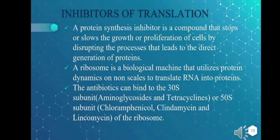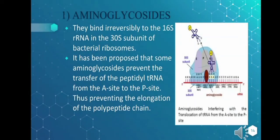Now we'll look at inhibitors of translation. A protein synthesis inhibitor is a compound that stops or slows the growth or proliferation of cells by disrupting the process that leads to protein generation. The ribosome plays an important role in translating RNA into proteins. Antibiotics can bind to the 30S subunit of the ribosome, like aminoglycosides and tetracycline, or to the 50S subunit, like chloramphenicol, clindamycin, and lincomycin.